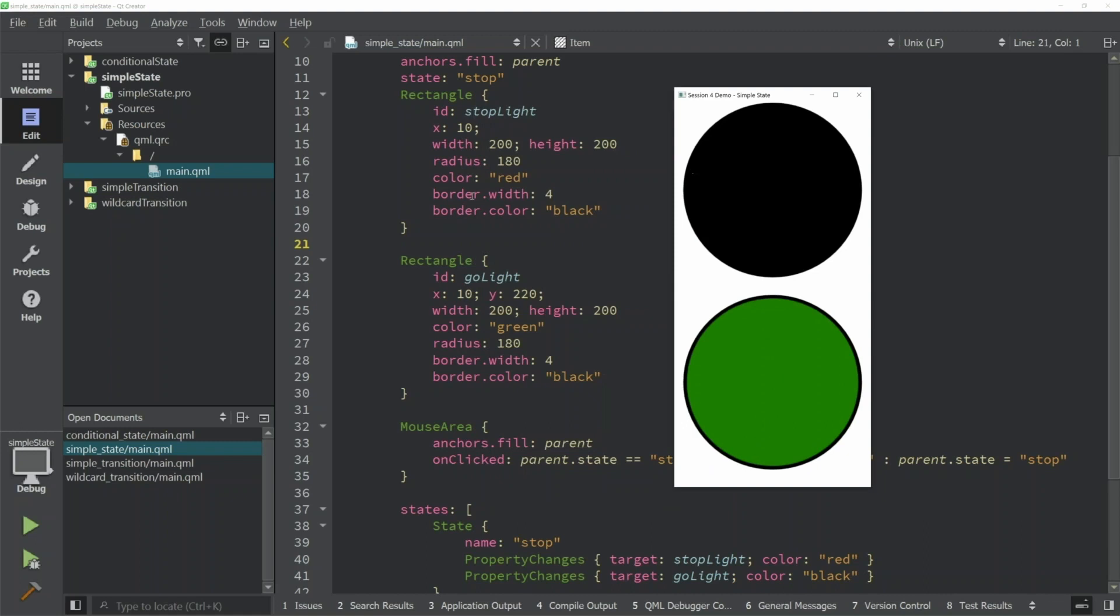One thing to note here is by default, our stop light has a color of red and our go light has a color of green. So if we were not entering the stop state, this light would be red and this light would be green when we started the application.